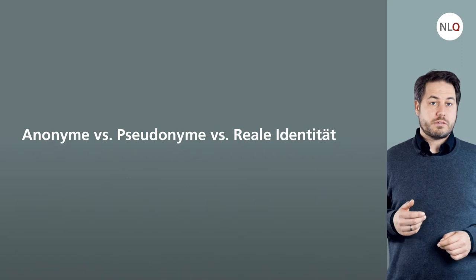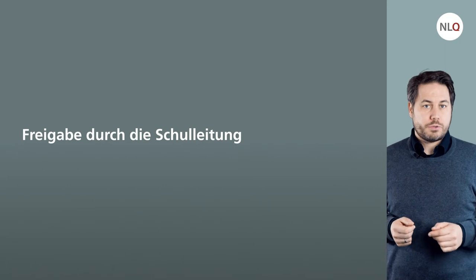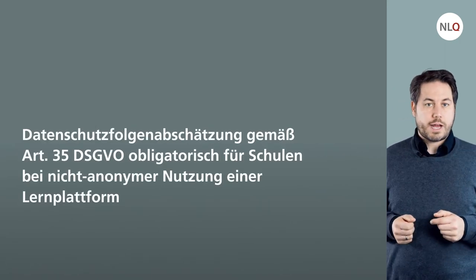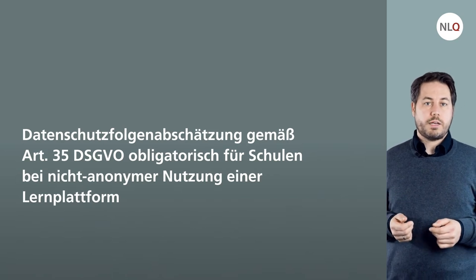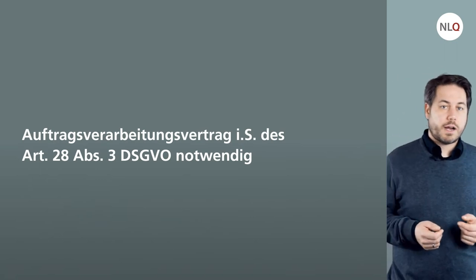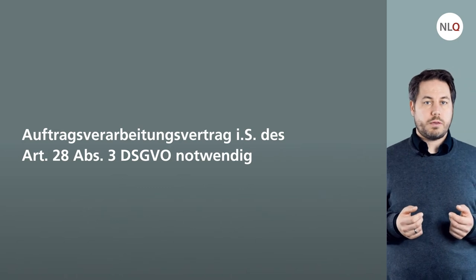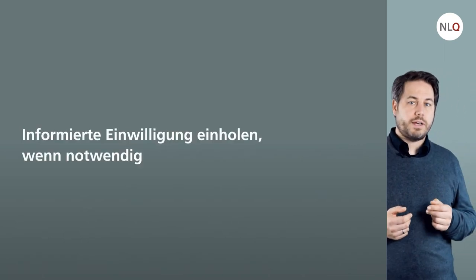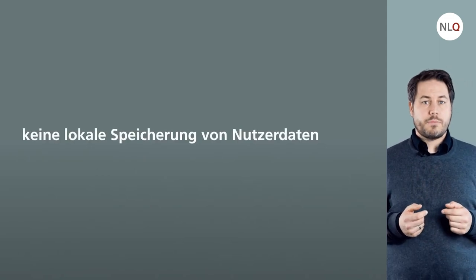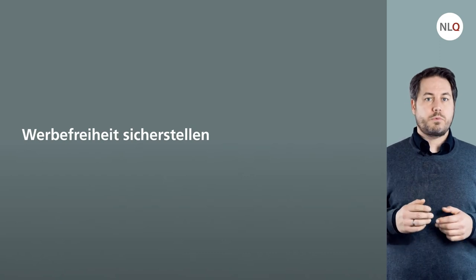Wenn wir schauen, was das Gelernte für die Praxis bedeutet, kommen wir auf folgende Punkte: Anonyme versus pseudonyme versus reale Identität muss geklärt werden. Wir brauchen eine Freigabe durch die Schulleitung. Es muss eine Datenschutzfolgeabschätzung gemäß Artikel 35 DSGVO geben – obligatorisch für Schulen bei nicht-anonymer Nutzung einer Lernplattform. Dann muss es einen Auftragsverarbeitungsvertrag im Sinne des Artikels 28 Absatz 3 DSGVO geben. Eine VVT ist notwendig. Die informierte Einwilligung muss eingeholt werden, wenn notwendig. Es darf keine lokale Speicherung von Nutzerdaten geben, und Werbefreiheit muss sichergestellt werden.